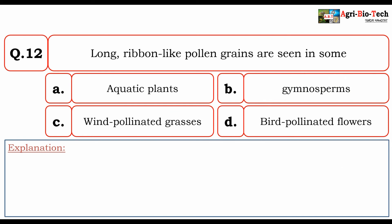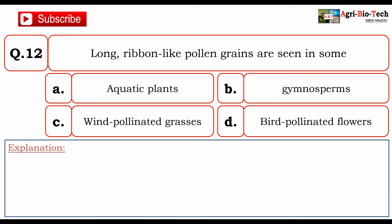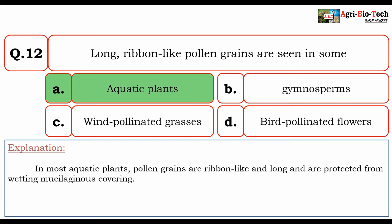Next question: long ribbon-like pollen grains are seen in some — aquatic plants, gymnosperms, wind-pollinated grasses, or bird-pollinated flowers? The correct option is A: aquatic plants. In most aquatic plants, pollen grains are ribbon-like and long, and are protected from wetting by a mucilaginous covering.